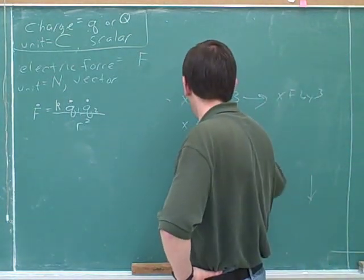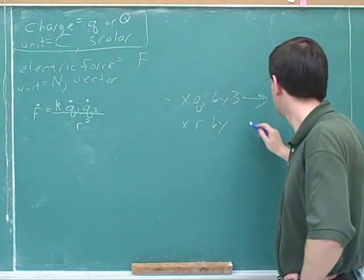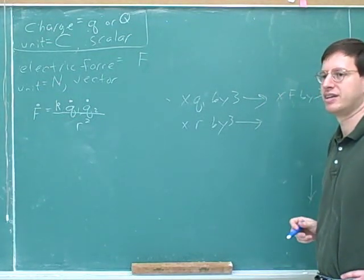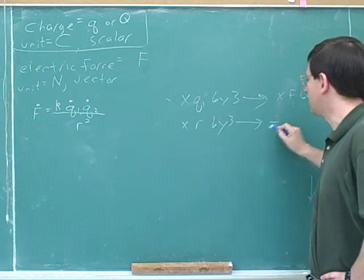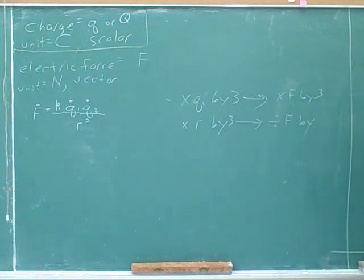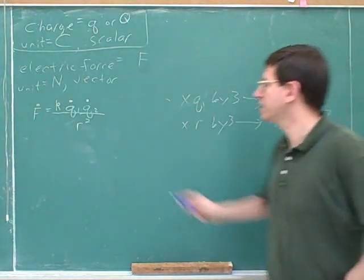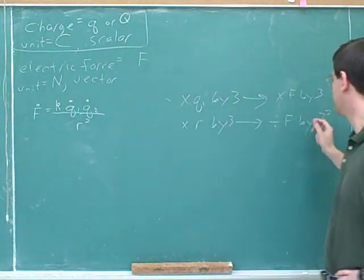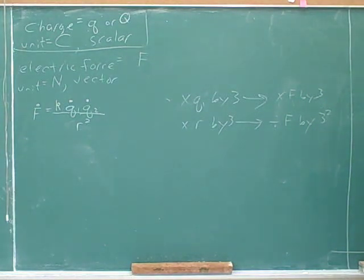And if you multiply r by 3 this is trickier. Well first of all should f now be multiplied or divided? Because they're inversely related. And what should it be divided by? If r is multiplied by 3 what would f be divided by? 3 squared because of this square here. Or equivalently we would divide f by 9. If we multiply r by 3 you would divide f by 9. Or if you wanted to you could say that we're multiplying f by 1 ninth. But I think this is a slightly better way to put it.